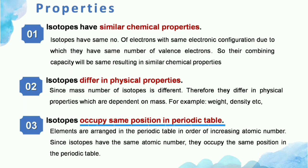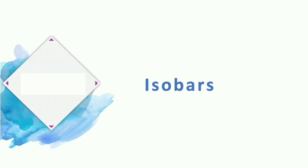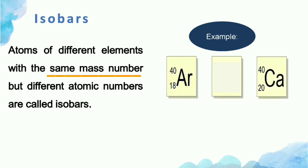Isotopes occupy the same position in the periodic table because they have the same atomic number, and elements are arranged in the periodic table in order of increasing atomic number. It is also possible for atoms of different elements with different atomic numbers to have the same mass number; such atoms are called isobars. Isobars are defined as atoms of different elements with the same mass number but different atomic numbers. For example, argon (atomic number 18) and calcium (atomic number 20) both have a mass number of 40, so they are called isobars.